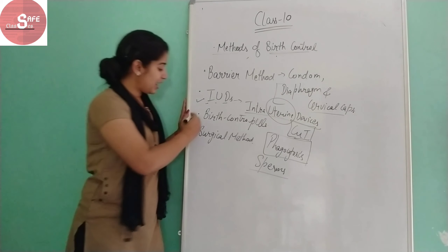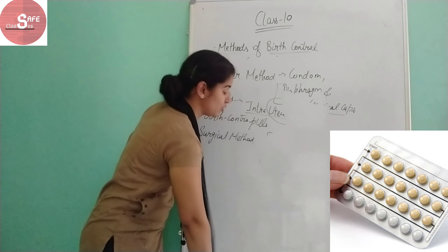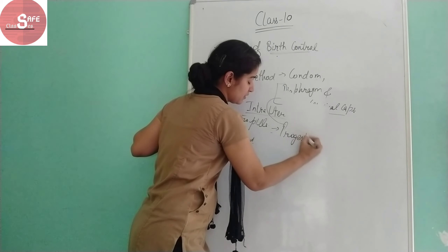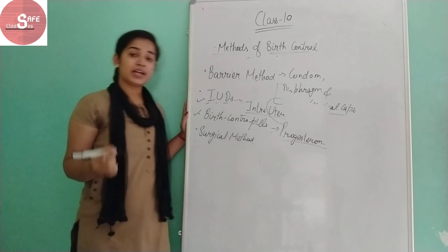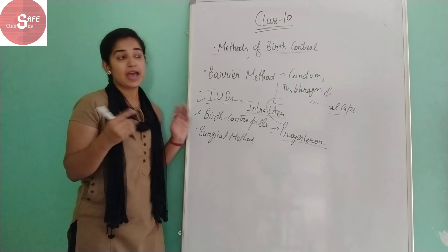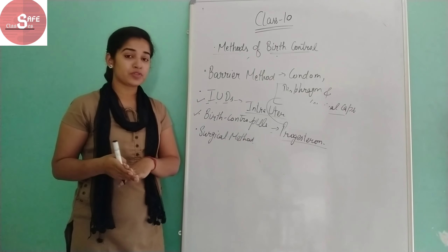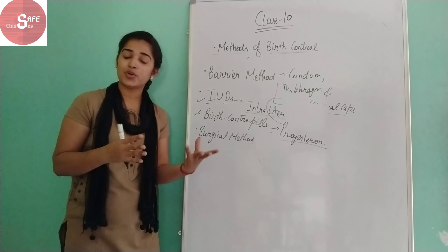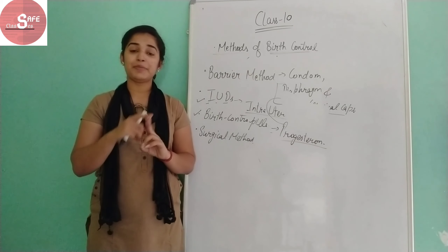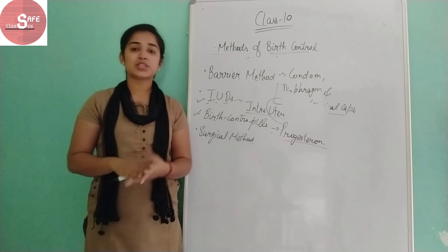The next method is birth control pills. These pills are hormone-based. What these hormones do is suppress one of the processes — ovulation. If the egg is not released, fertilization cannot take place, and so pregnancy is prevented. These birth control pills work by preventing ovulation or fertilization.